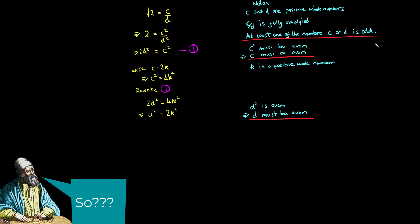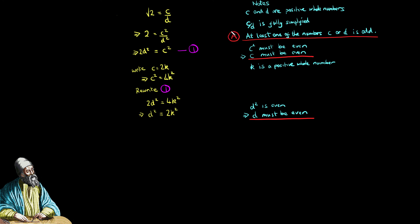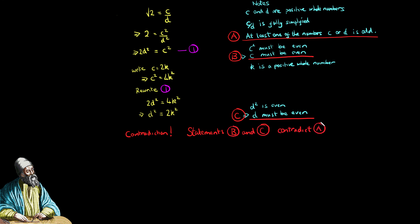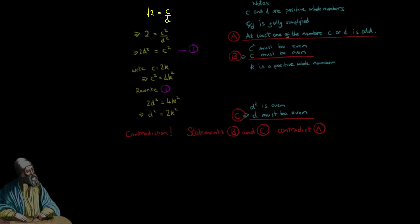We have a contradiction, which means our initial assumption that root 2 equals C over D is wrong.